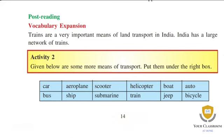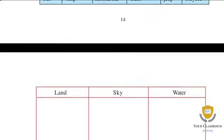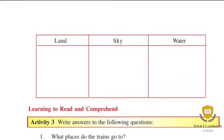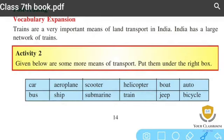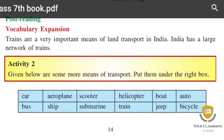Activity 2: Given below are some more means of transport. Put them under the right box. Here we have three boxes: Land, Sky, and Water. Under Land transport, you can see: Car, Bus, Scooter, Auto, Train, Jeep, and Bicycle. All these are land transports.